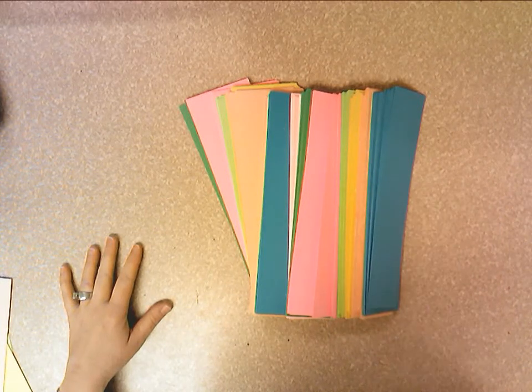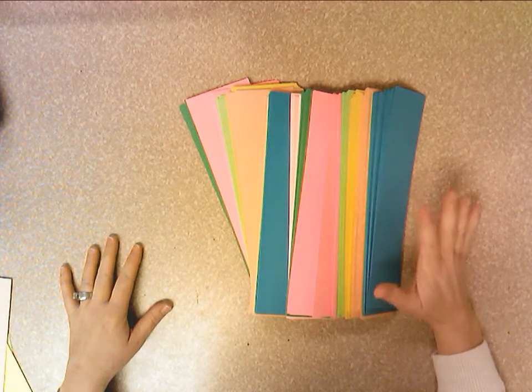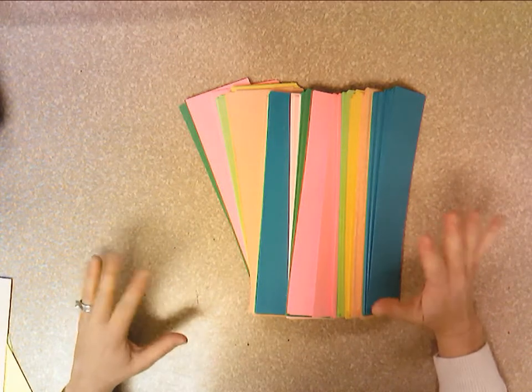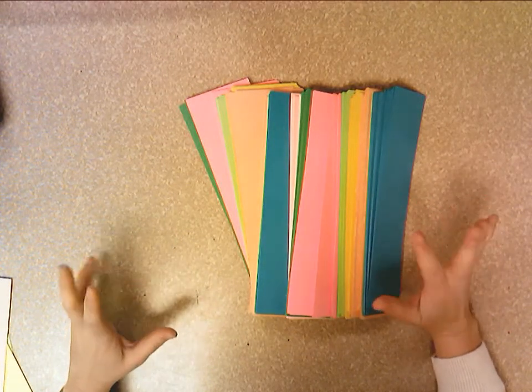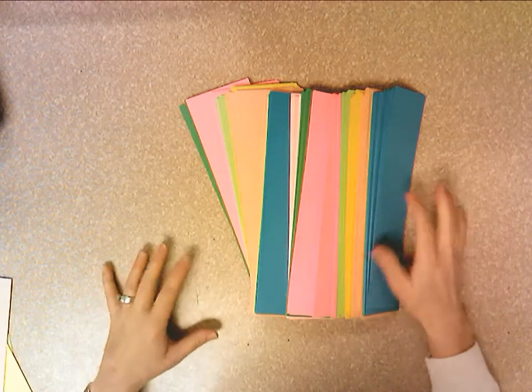So today we're going to start Magic Carpet with pattern and shapes and alternating two or more kinds of lines or shapes to create patterns and different colored strips.